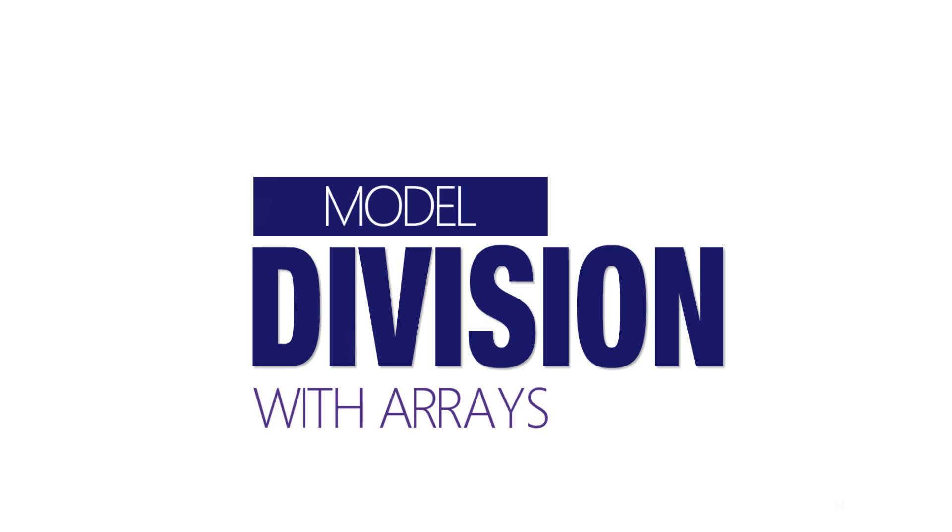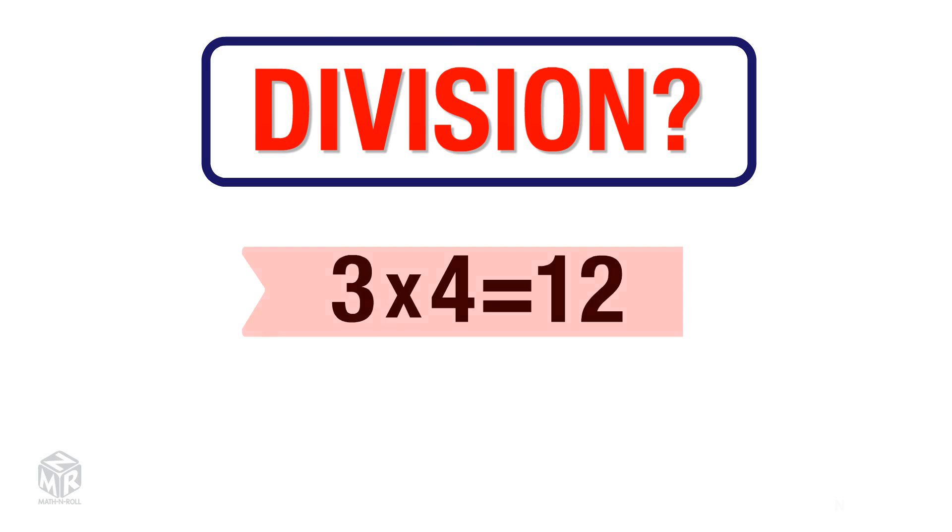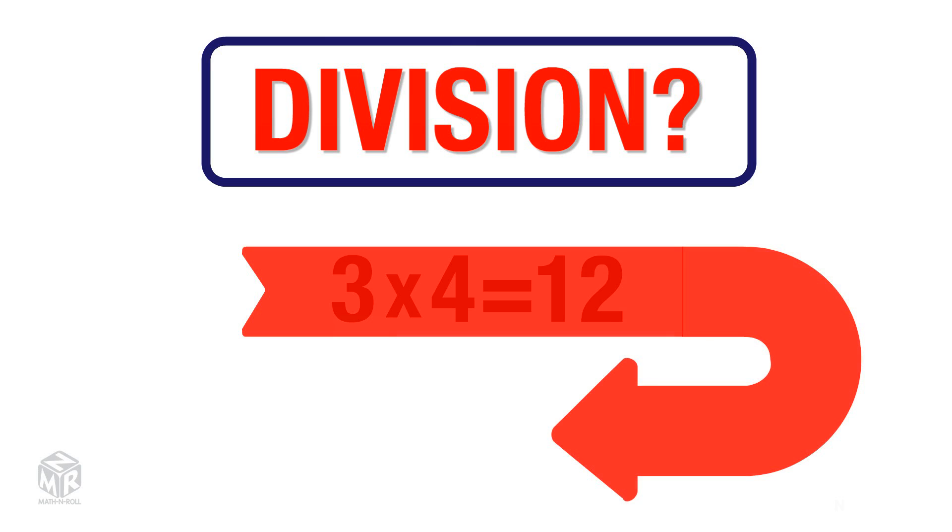Model division with arrays. What is division? Division is the opposite of multiplication. For example, 3 times 4 equals 12. The opposite of this multiplication sentence is 12 divided by 3 equals 4.